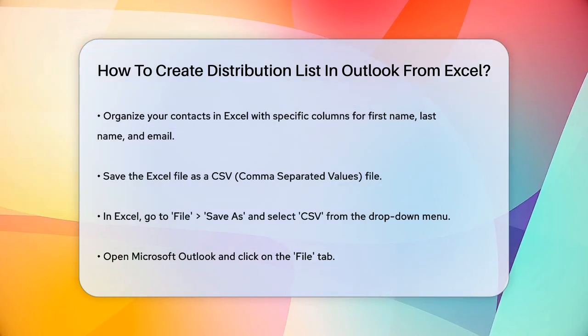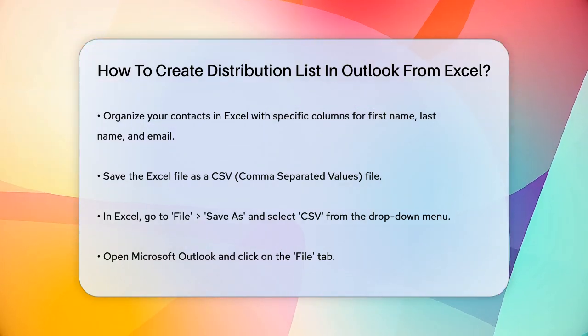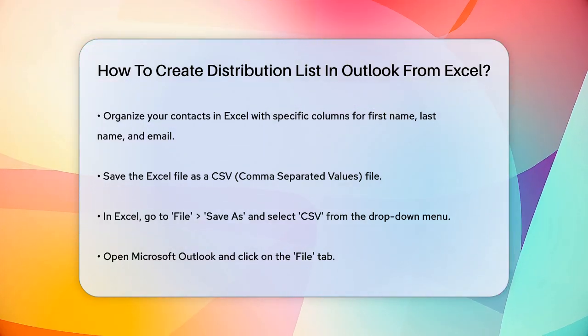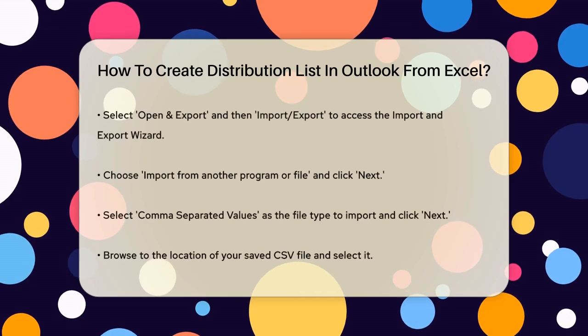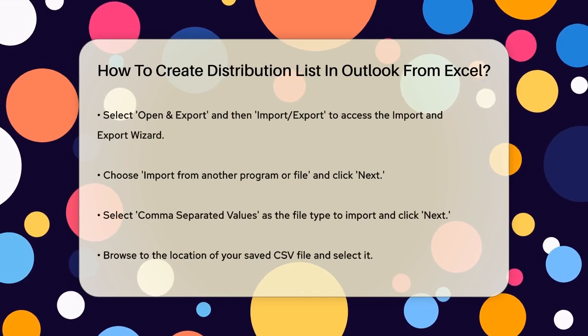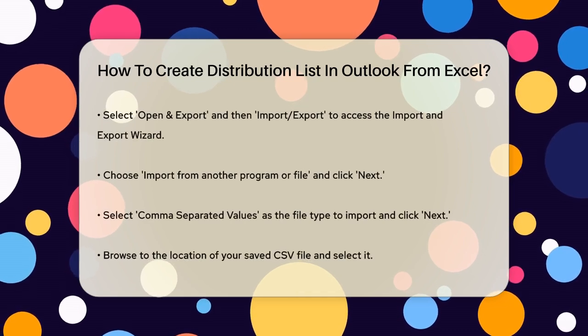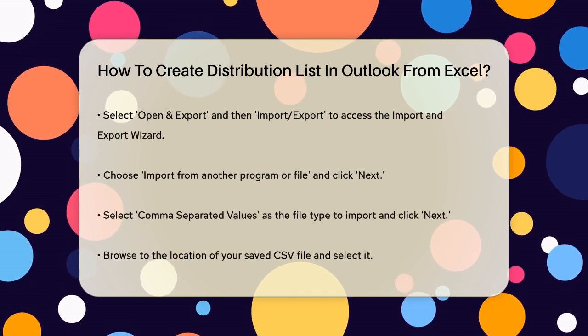To do this, go to the File menu in Excel, select Save As, choose CSV from the drop-down menu, and save the file to a location like your desktop.